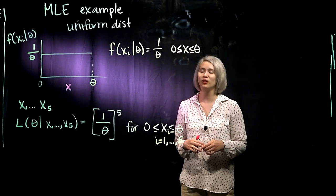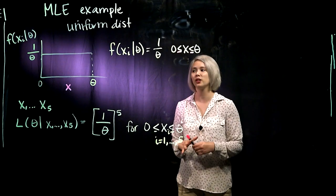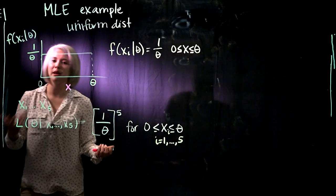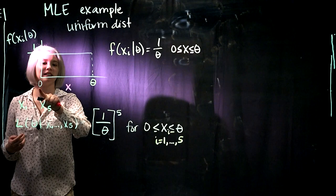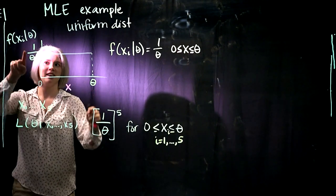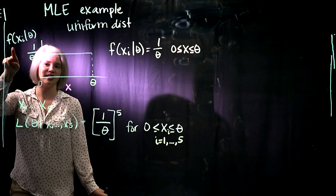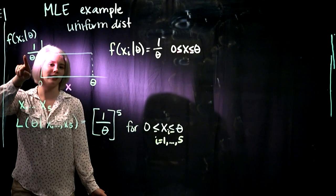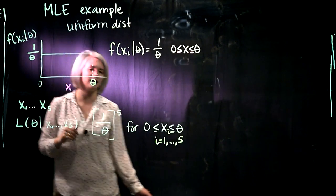So in this example, we're using uniform distribution. So here's our uniform distribution. Maybe we're uniformly distributed between 0 and theta. Then here's our PDF. It's at height 1 over theta to ensure, of course, that this integrates to 1.